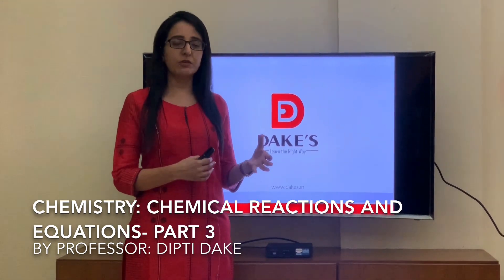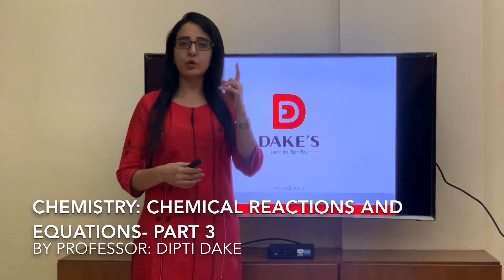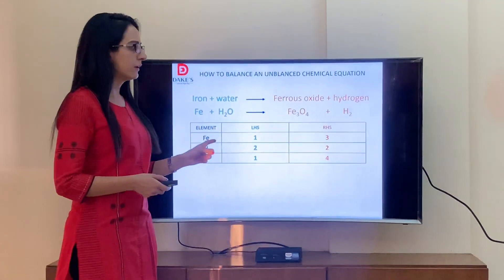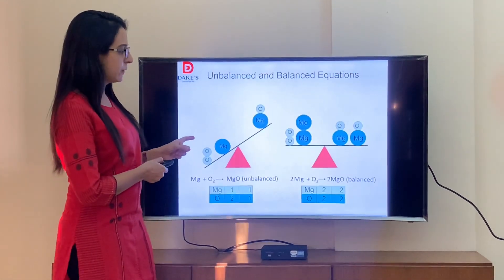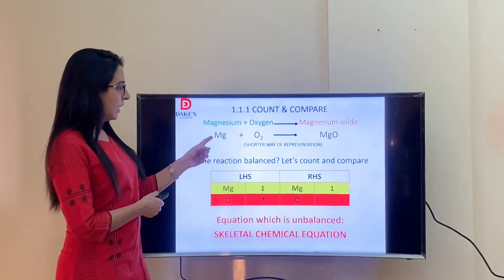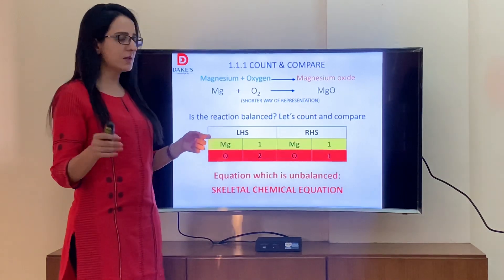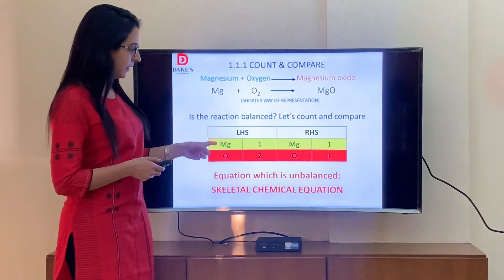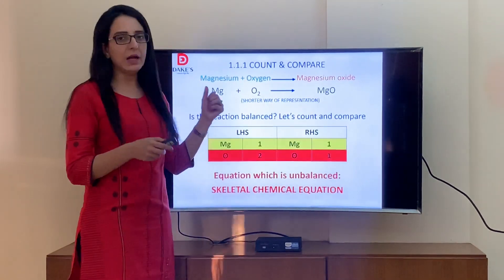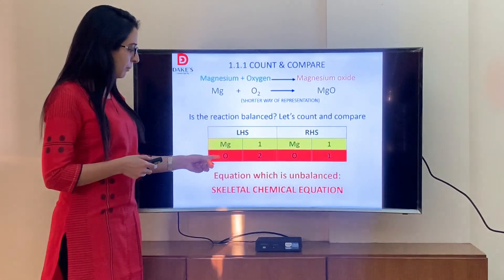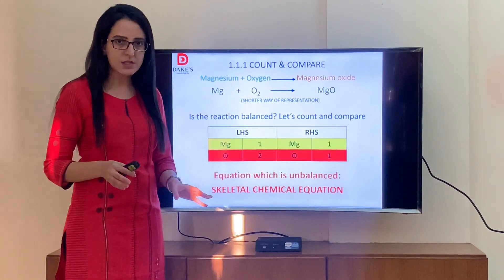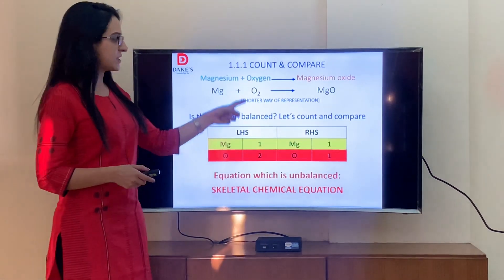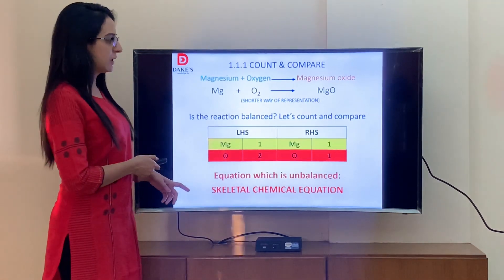Give us a call on 8805-137-642 today. So in yesterday's video, we had learned what is a skeletal chemical equation. A reaction or a chemical equation which is not balanced is called a skeletal chemical equation. As you can see, magnesium is balanced on both LHS and RHS, but oxygen is not balanced — oxygen on LHS is 2, RHS is 1. Such equations are called skeletal chemical equations.